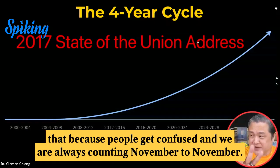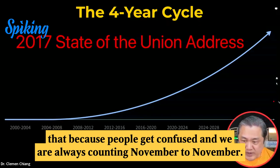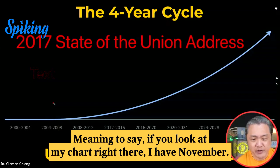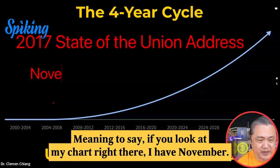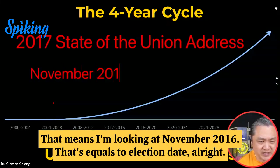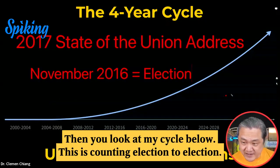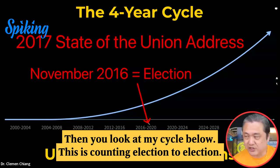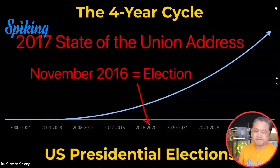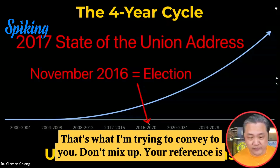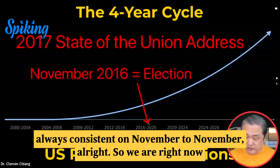Please remember that, because people get confused, and we are always counting November to November. Meaning to say, if you look at my chart right there, I have November — that means I'm looking at November 2016, which equals the election date. Then you look at my cycle below — this is counting election to election. That's what I'm trying to convey to you. Don't mix up. Your reference is always consistent on November to November.